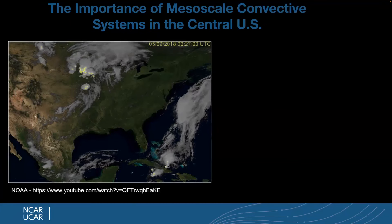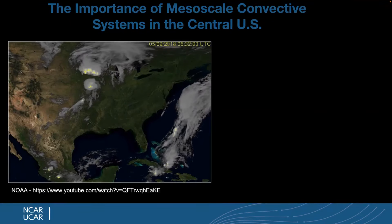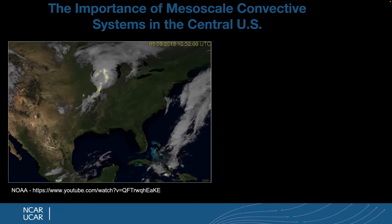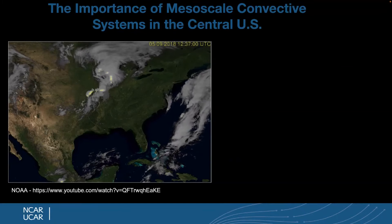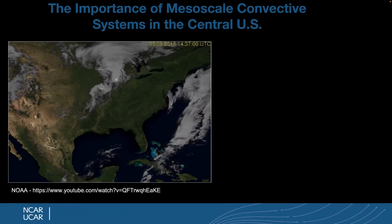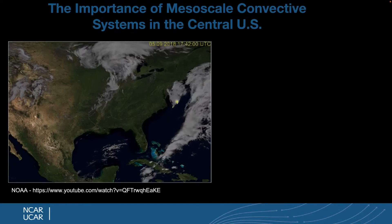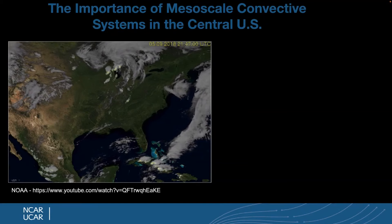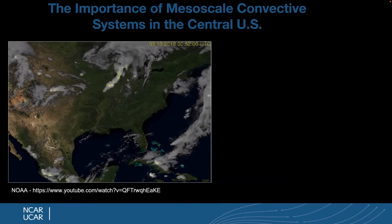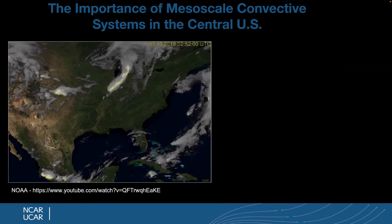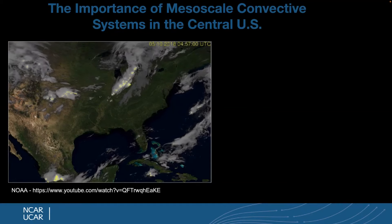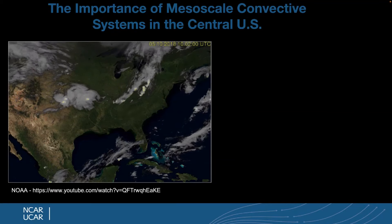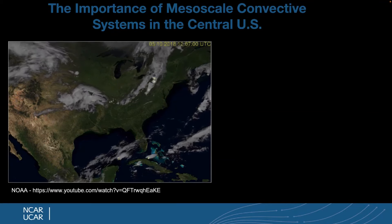This is a typical satellite image you can get for almost every day in the central US during summertime — geostationary satellite observations of the cloud field with yellow dots showing lightning strikes. One MCS has just dissipated but another is spinning up, with a line of convection over the Great Lakes region and another coming in from Colorado into the plains. These MCSs are really the dominant weather features in the central US during the warm season.